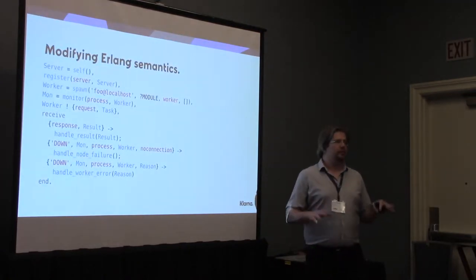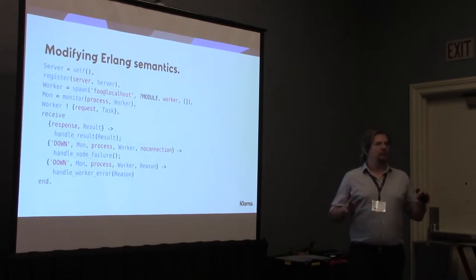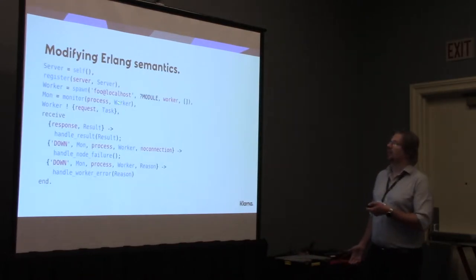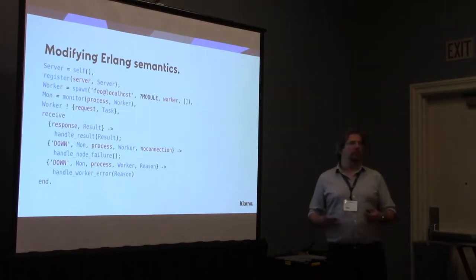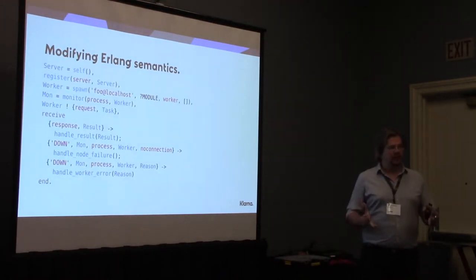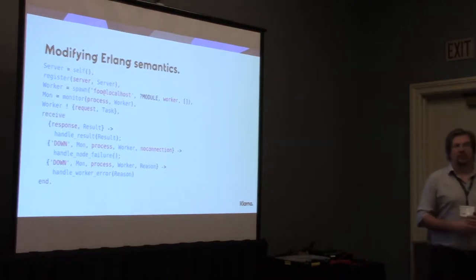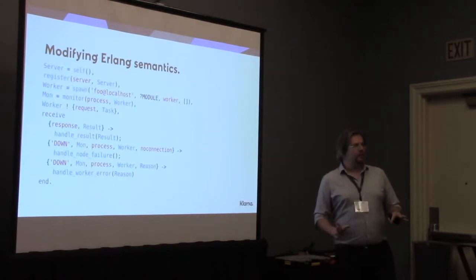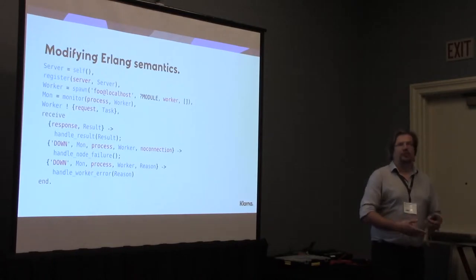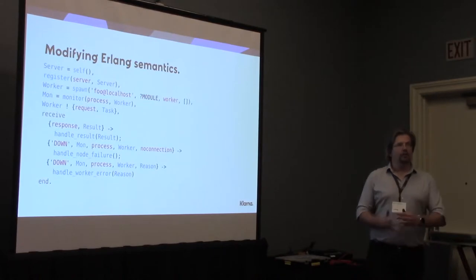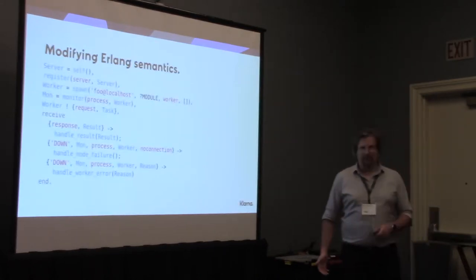If you want to simulate distributed Erlang, you inevitably have to modify the semantics of some of the distribution primitives. For example, a native spawn on a remote node — you don't want to do this in a simulator. Depending on how you model the remote processes, you may also have to modify the message sending or monitoring primitives. You could do this two ways: use a modified version of the BEAM runtime system, which is not really feasible, or recompile the code and swap these primitives with your custom implementation. ConcuerError already does this, so we cannot go on the same route, otherwise we lose those capabilities.